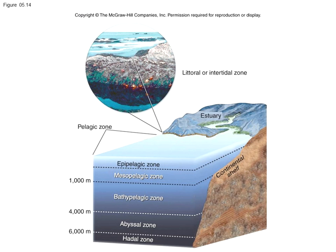Now we're going to look at the aquatic biomes. While temperature, precipitation, and moisture availability drive the broad vegetation types that we see in terrestrial systems, these drivers are quite different in aquatic systems. The drivers include salinity, depth of water, proximity to shore, wave action or water velocity, light penetration, and temperature. So the biome concept is still the same, but the actual determinants are quite different in aquatic biomes.